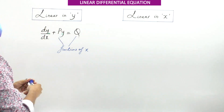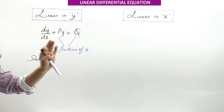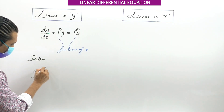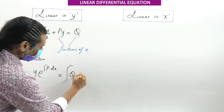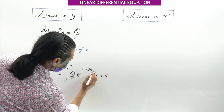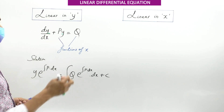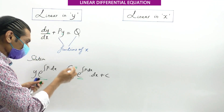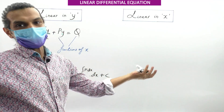Once we confirm it is Linear in Y, the solution is written as: Y · e^(∫P dx) = ∫[Q · e^(∫P dx)] dx + C. You first find the integration ∫P dx, substitute it in, then multiply Q by e^(∫P dx) and integrate the whole thing. That gives the answer.